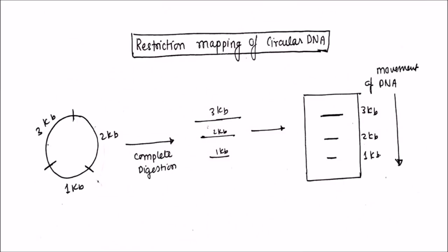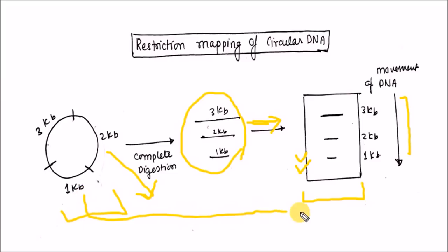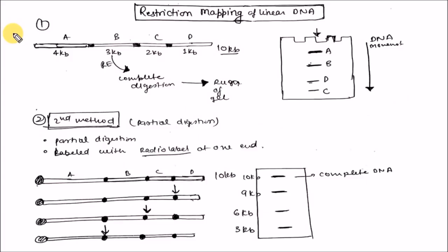This is the restriction mapping of circular DNA. Restriction mapping is the process where you digest the linear or circular DNA with restriction digestion, obtain the restriction fragments, run gel electrophoresis on those fragments, and generate a map. This map is known as a restriction map, and the whole process from restriction digestion to mapping is known as restriction mapping. The next topic is restriction mapping of linear DNA, which similarly involves generating a restriction map after running the gel.